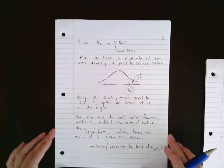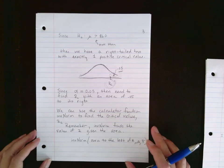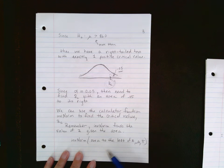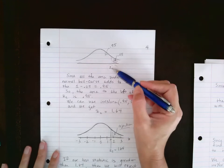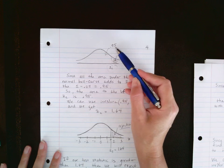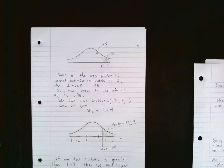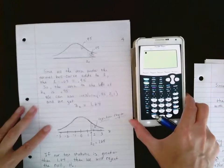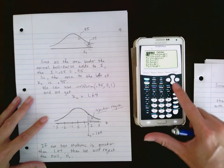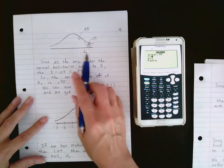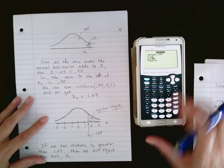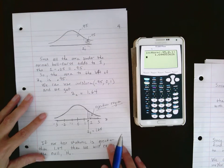We can use the calculator to find this critical value using the inverse norm function to find a Z when we know the area. It has to be the area to the left of Z when we enter it in the calculator. Since all the area under the bell curve adds to 1, the area to the left of Z would be 0.95, because 0.95 plus 0.05 equals 1. In the calculator, go to second, distribution, inverse norm. The area to the left is 0.95, the mean is 0, and the standard deviation is 1. There is our critical value: 1.64.